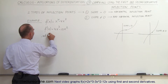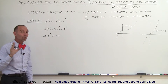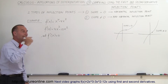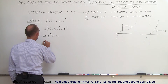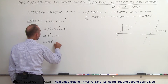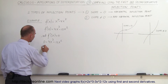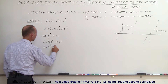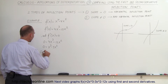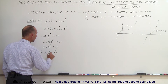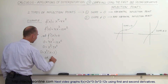Set f'(x) equal to zero. We're finding all critical points with zero slope — both max, min, and horizontal inflection points. So: 0 = 4x³ - 12x². Divide both sides by 4: 0 = x³ - 3x². Factor out x²: 0 = x²(x - 3), which means x = 0 or x = 3.